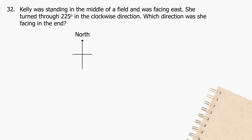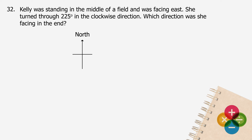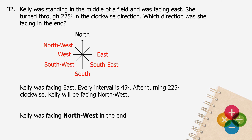Question 32: Kelly was standing in the middle of a field and was facing east. She turned through 225 degrees in the clockwise direction. Which direction was she facing in the end? Kelly was facing east. Every interval is 45 degrees. After turning 225 degrees clockwise, Kelly will be facing northwest. Kelly was facing northwest in the end.